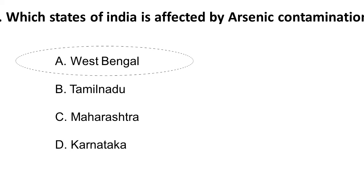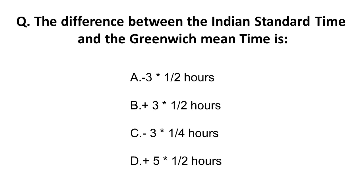The next question is about time difference: What is the difference between Indian Standard Time and Greenwich Mean Time? The correct answer is that India is five and a half hours ahead of GMT. As you go eastward, time increases, so those countries are ahead of us; as you go westward, they are behind us. India is ahead of Greenwich Mean Time by five and a half hours.